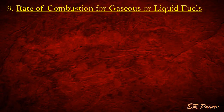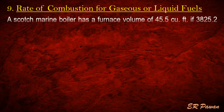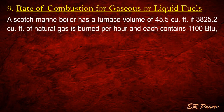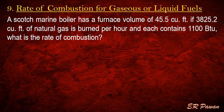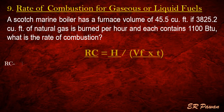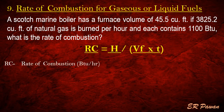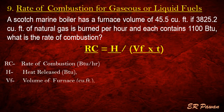Formula 9 — Rate of Combustion for Gaseous or Liquid Fuels. A scotch marine boiler has a furnace volume of 45.5 cubic feet. If 3,825.2 cubic feet of natural gas is burned per hour and each cubic foot contains 1,100 BTUs, what is the rate of combustion? Rate of combustion equals heat release divided by volume of furnace multiplied by time. Let's put the value in the formula.